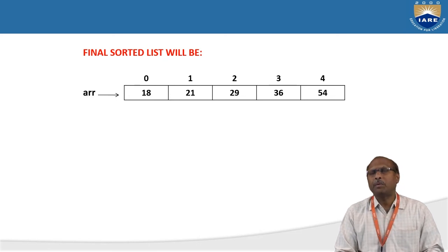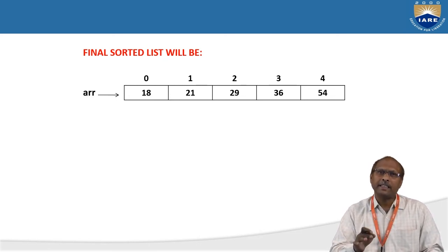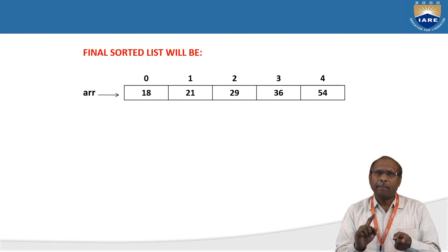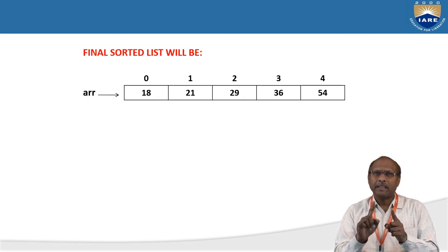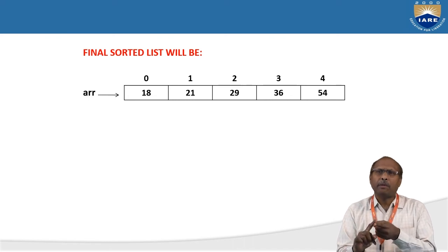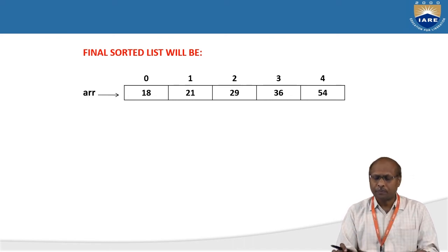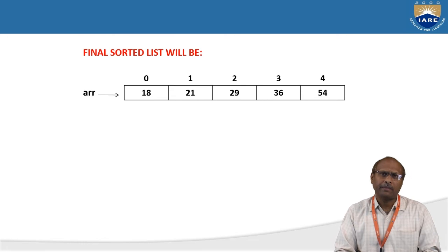This is the way Bubble Sort works. Bubble Sort always checks its neighbor — it compares adjacent elements. If the first one is bigger, then swap. If the first one is smaller, no need to do swapping. This point you should remember.